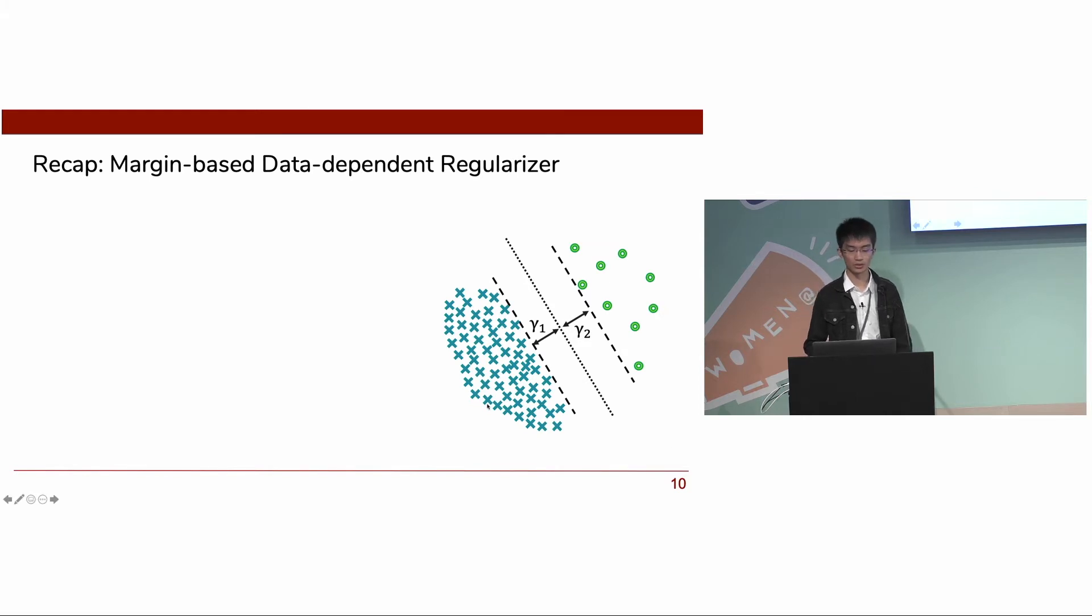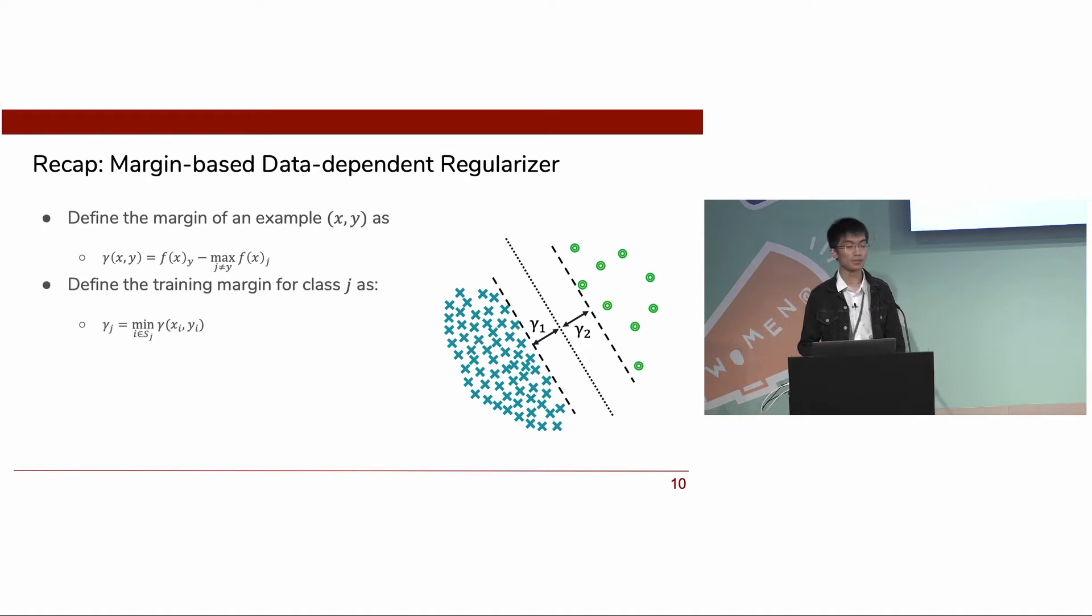Here in our work, we consider using a margin-based data-dependent regularizer. To have a short recap, the margin of an example (x, y) is defined as the distance of its prediction to the decision boundary. In multi-class setting, margin is computed by subtracting the second largest from the largest logit.